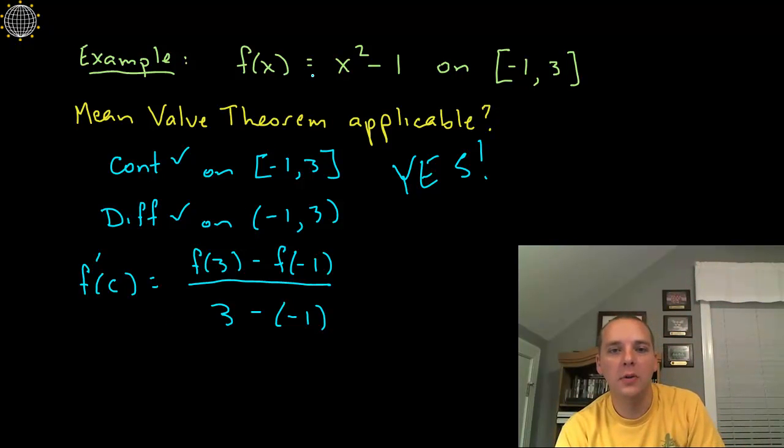So all we would have to do is take this guy's derivative, which would be 2x, that's the derivative of f, and we would set it equal to—now we have to do a little math.